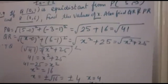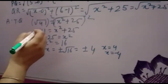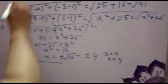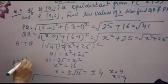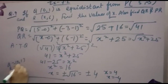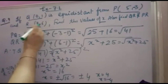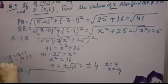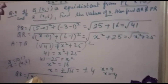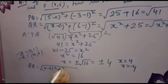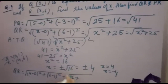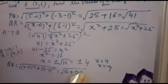Now you want to find QR and PR. For QR, Q is (0, 1) and R in the first case — since X = 4 — is (4, 6). So QR = √((4−0)² + (6−1)²) = √(16 + 25) = √41.